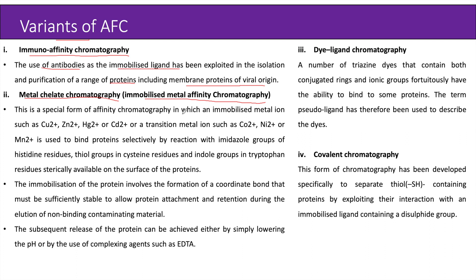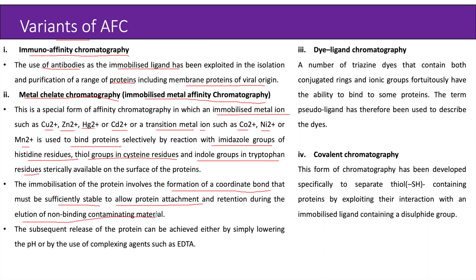Immobilized metal affinity chromatography is a special form in which an immobilized metal ion — such as copper, zinc, mercury, or cadmium — or a transition metal ion such as cobalt, nickel, or manganese is used to bind proteins selectively by reaction with imidazole groups of histidine residues, thiol groups in cysteine residues, and indole groups in tryptophan residues, sterically available on the protein surface. The immobilization involves formation of a coordinate bond stable enough to allow protein attachment and retention during elution of non-binding contaminating material. Subsequent release of the protein can be achieved by lowering the pH or using complexing agents such as EDTA.